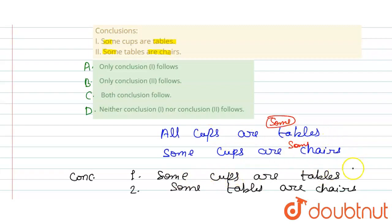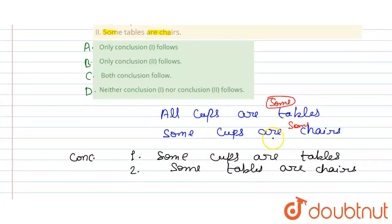So, first conclusion is cup and table. Cup and table, first statement is here, and some cups are tables. So, obviously, our conclusion is there. So, here we have some positive statement, some tables are cups. That means, this statement is what we will follow.